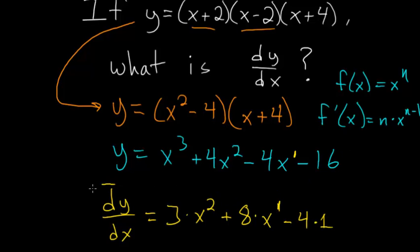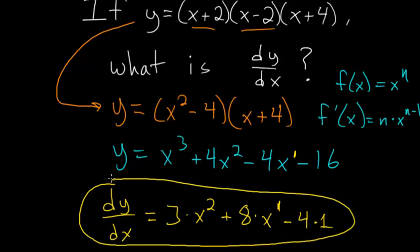So our derivative of y with respect to x is this quadratic 3x squared plus 8x minus 4. And notice that it's just 1 degree less than the function.